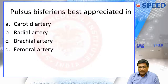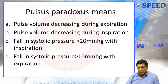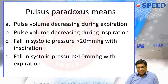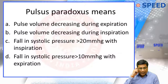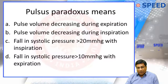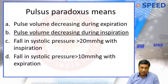Pulsus bisferiens is best appreciated in the carotid artery. Pulsus paradoxus means — there are three or four statements. The best statement is that pulse volume decreases in inspiration. Another statement says fall in systolic pressure more than 20 — but the correct definition is a fall in systolic pressure of more than 10 mmHg. A fourth statement is also wrong because it says the fall in pressure occurs in expiration. So the best answer is: pulse volume decreasing in inspiration is pulsus paradoxus.